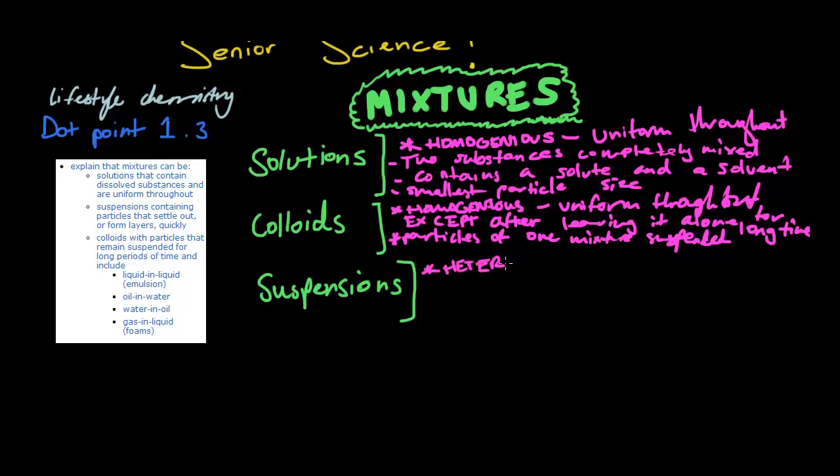As I said in the other ones, homo means uniform throughout, and hetero, what it actually means is that it's not uniform throughout. It means that it has layers, or it's completely inconsistent, it's very inconsistent, not uniform throughout.